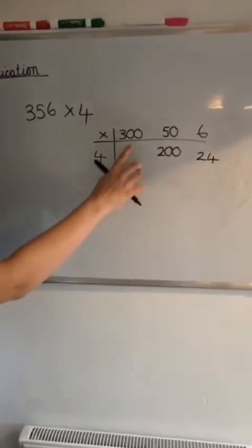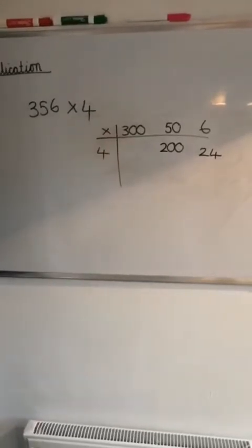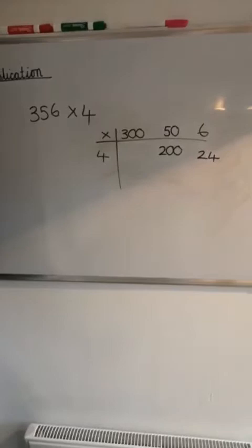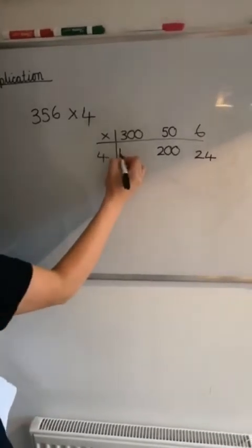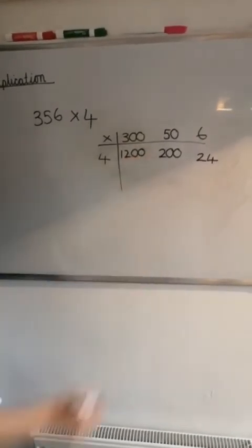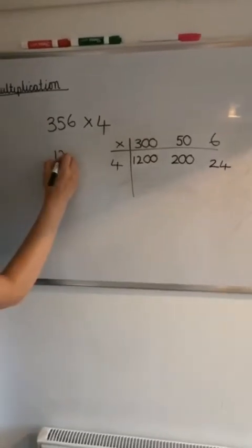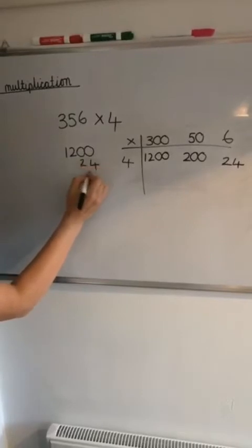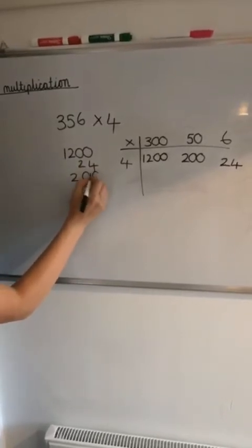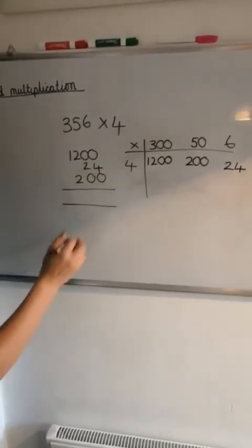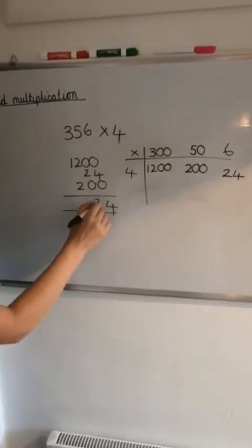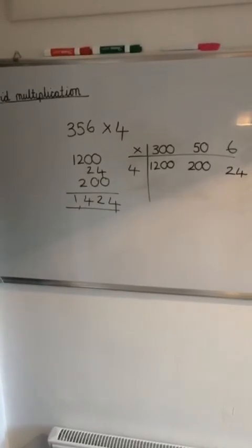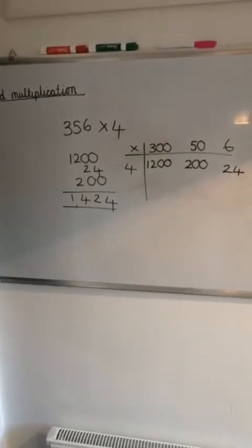And then 300 times 4. I know that 3 times 4 is 12, so 300 times 4 is 1,200. And then we add all of those together. And then we've got 4, 2, 4, 1. So you should have 1,424 for that one.